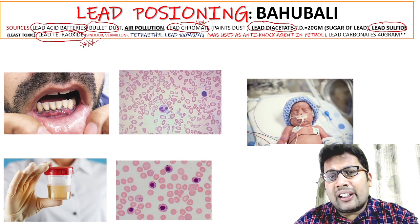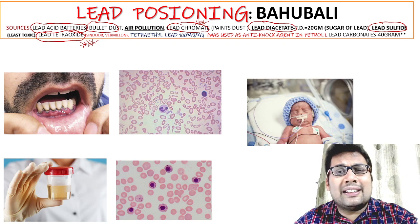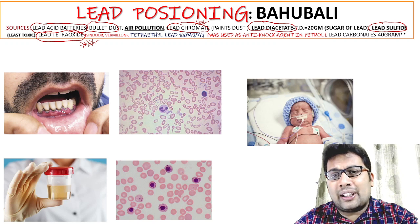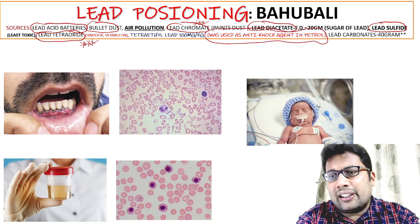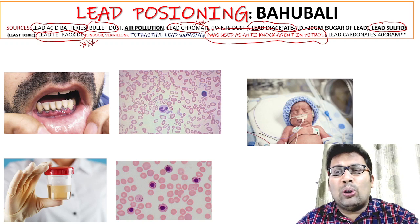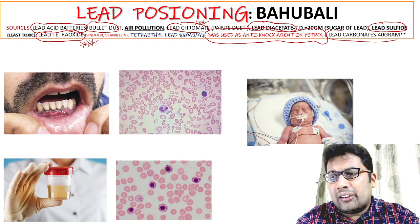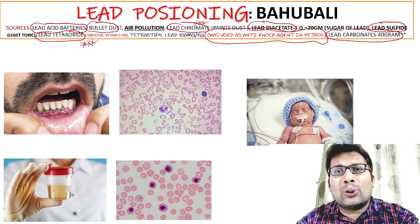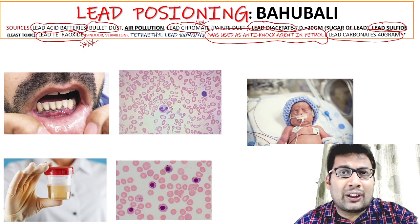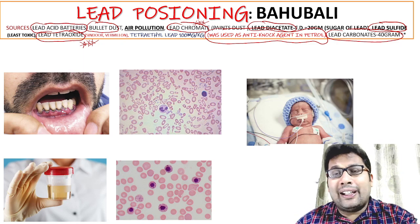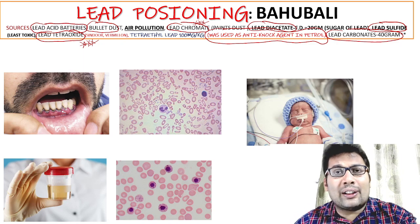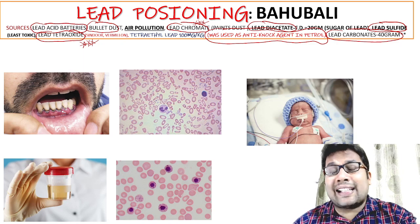Tetraethyl lead has a fatal dosage of around 100 milligrams per kilogram body weight. Lead carbonate is used as an anti-knock agent in petrol, with a fatal dosage of 40 grams. Lead poisoning is also known as painter's colic and saturnism.